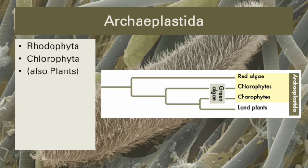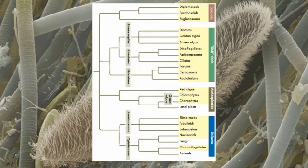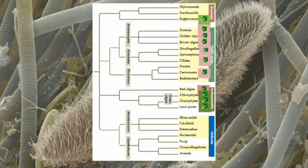We know that photosynthesis is a very complex process, requiring all the workings of the chloroplast to achieve both the light reactions and the Calvin cycle. So how can such a complex process evolve multiple times independently? If we look at the phylogeny of eukaryotes, photosynthesis occurs in three of the four major clades of eukaryotes. All three clades of SAR have photosynthetic members, and some Euglenozoans, but most of Excavata do not photosynthesize.